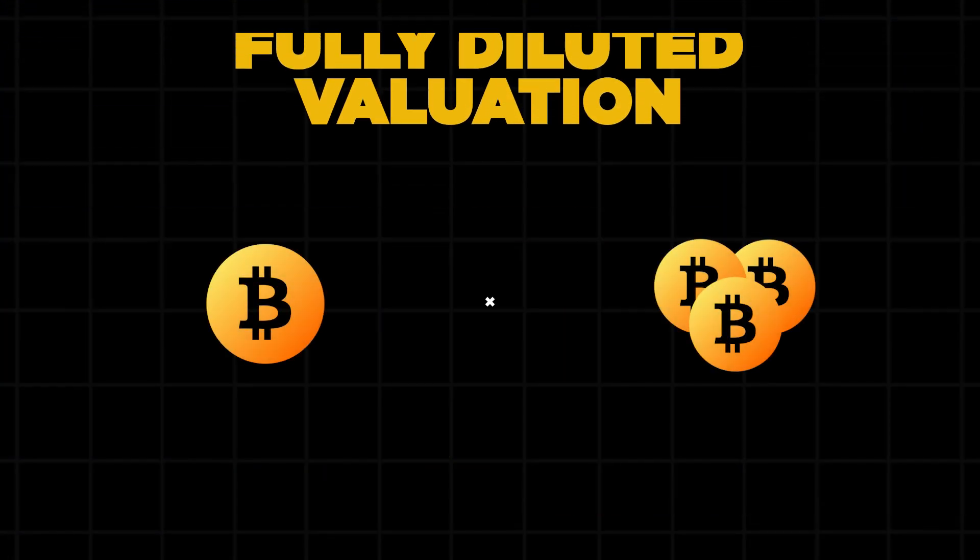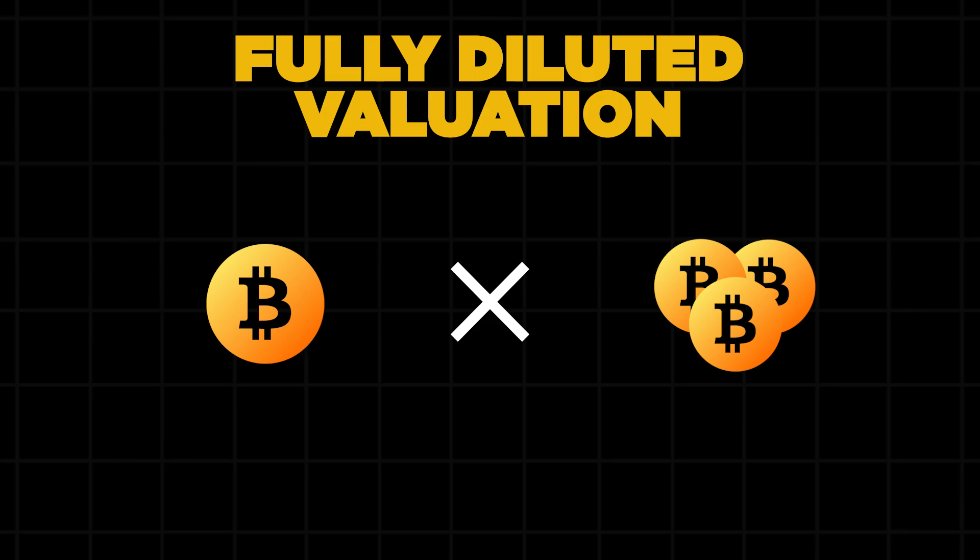FDV is a projection that shows what a crypto project would be worth if every single token that ever exists was available now at today's price. Think of it this way: market cap only counts tokens trading today. FDV gives you the full picture, calculating the theoretical value of all possible tokens, including those still locked up or not yet created. It's a forward-looking metric that assumes the entire supply is already live.